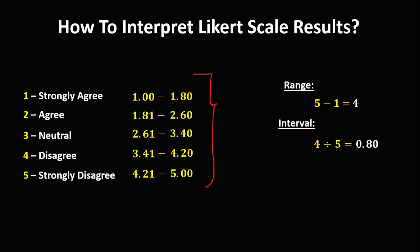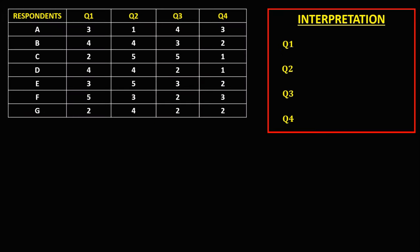Then to interpret the result using this Likert scale, for example, we have the responses of 7 respondents — respondents 1 through 7 — and we have these 4 questions. These are the responses of these 7 respondents.